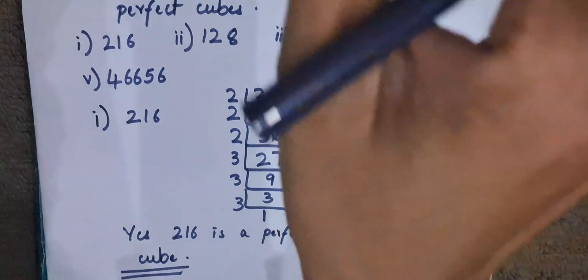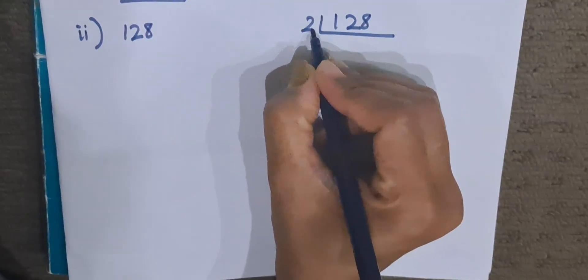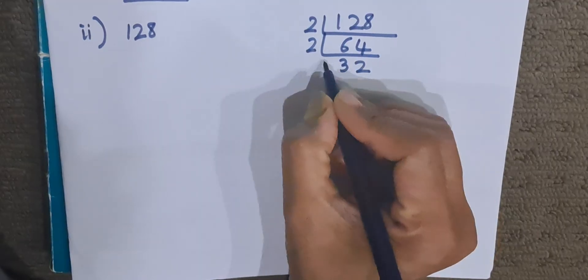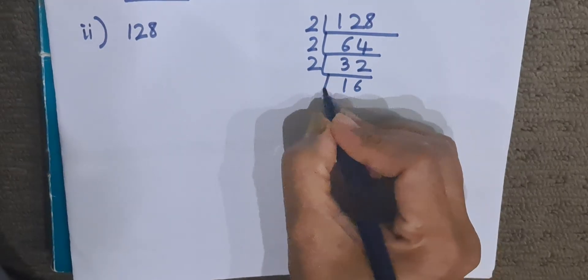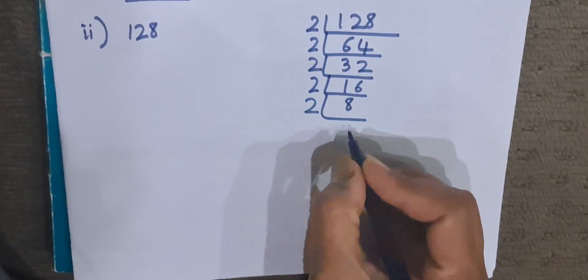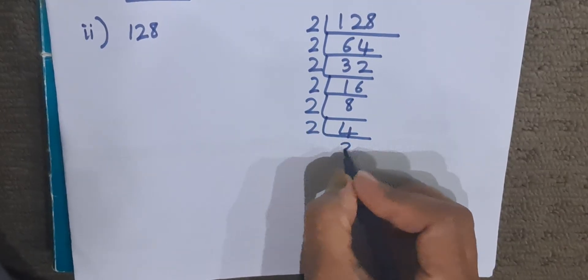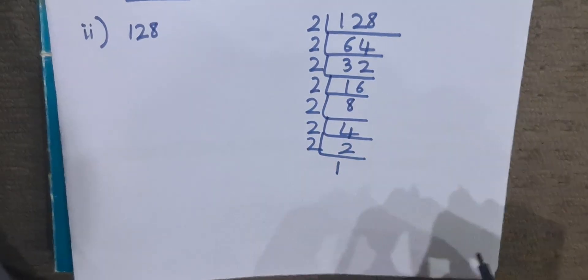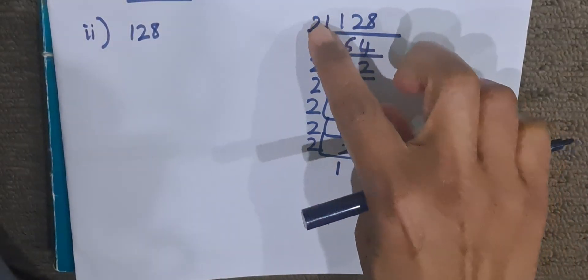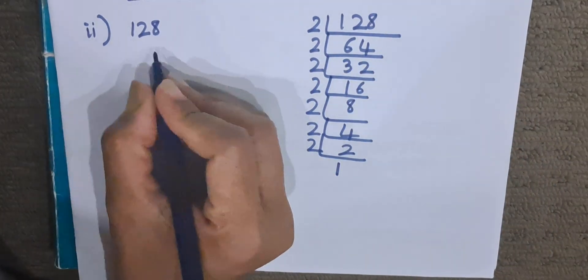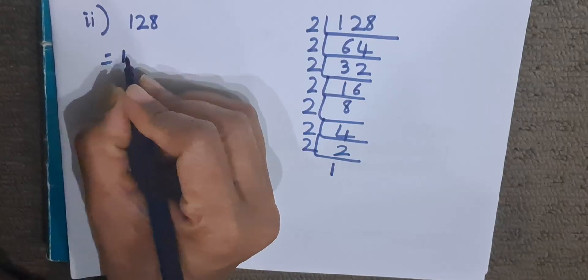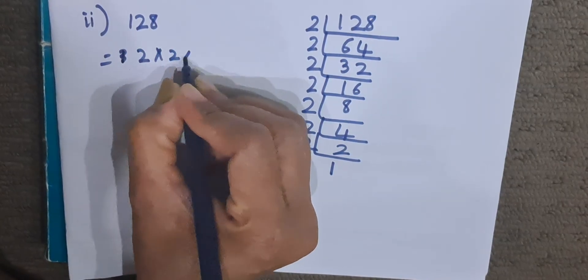Now let us do the second sum, which is 128. We factorize 128 by dividing by 2 repeatedly: 128 ÷ 2 = 64, ÷ 2 = 32, ÷ 2 = 16, ÷ 2 = 8, ÷ 2 = 4, ÷ 2 = 2, ÷ 2 = 1. We have gotten seven 2s. The factors of 128 are 2 × 2 × 2 × 2 × 2 × 2 × 2, that is 2 seven times.